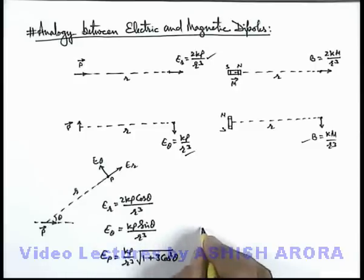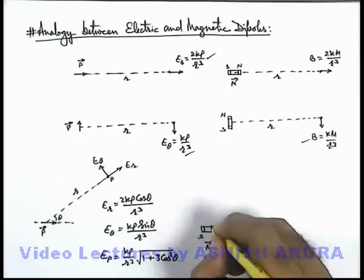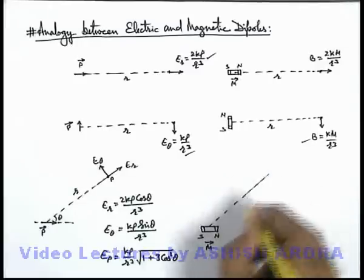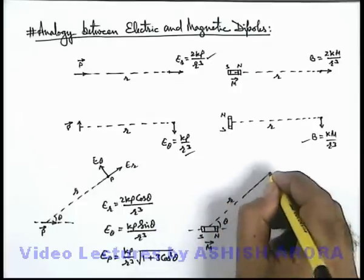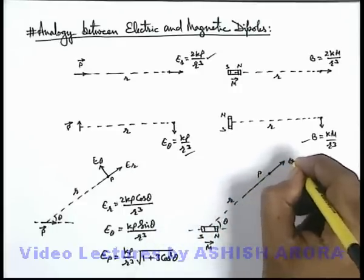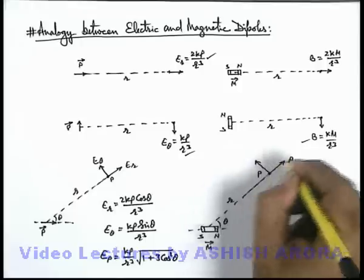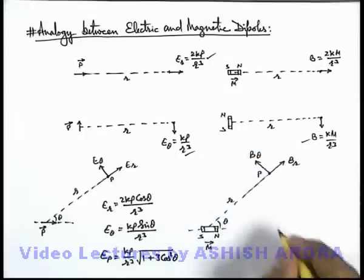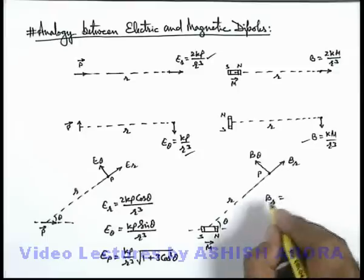Similar to this, if we are given with a short magnetic dipole with magnetic poles N and S with a dipole moment vector m, then at an angle θ from its axial direction at a radial distance r, if there is a point P, we can define in the similar manner that magnetic induction has 2 components: one is radial component and other is transverse component. And here the values of Br and Bθ can also be written.